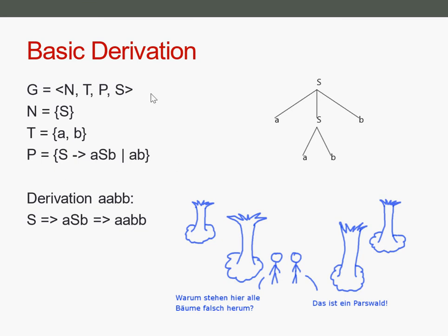Here we have a grammar definition called a context-free grammar. It consists of four parts. The first are the non-terminals — you use them to derive words from the grammar, meaning you do some calculation with them, and if you have one, you are not done yet. Then you have the terminal symbols, which are the ones you don't do further calculations on, and these are the ones your strings and words are actually consisting of.